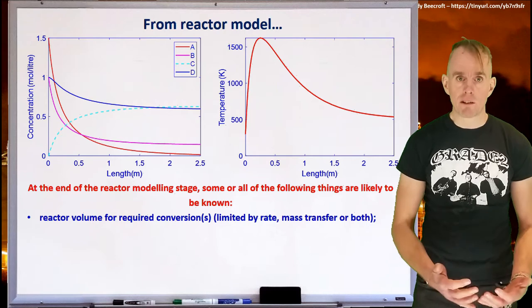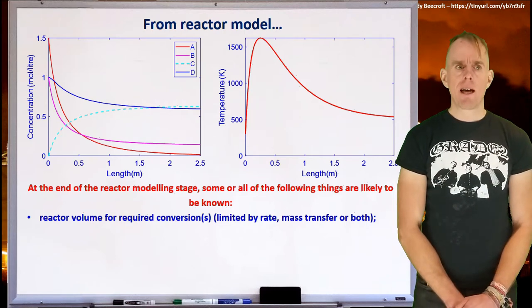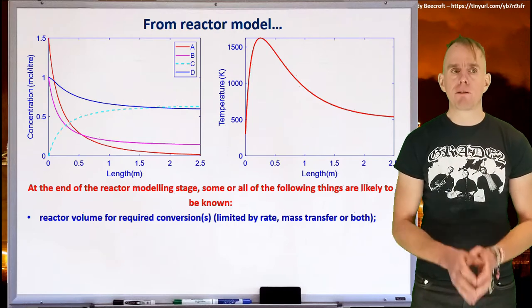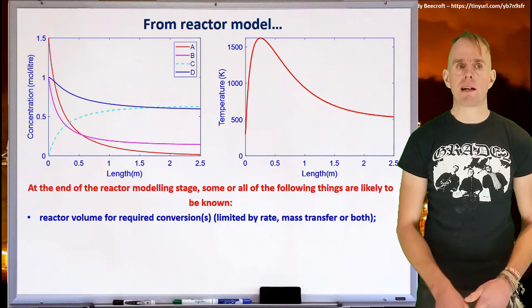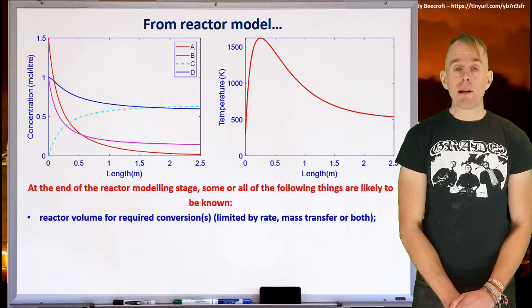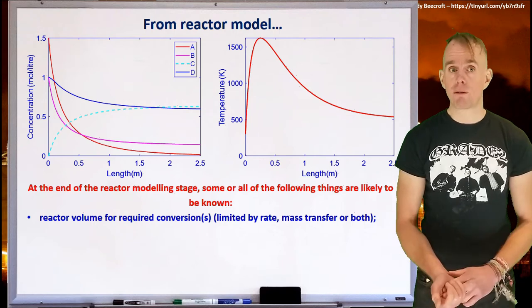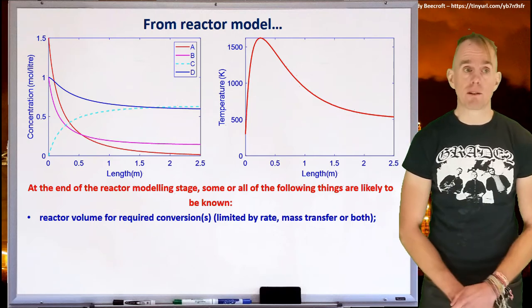We wrote the model ourselves, or we may have elected to use a model within a flow sheeting package, and that model was able to deliver us some information. We were able to ascertain the volume of reactor required for whatever conversion that's going on, and that was probably going to be limited by equilibrium, by rate, or by mass transfer, or sometimes a combination of these things.